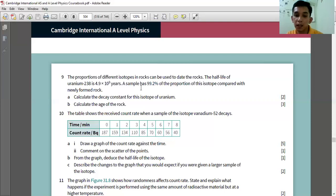So this 99.2 percent is the ratio between the original number of the radioactive materials with the number after it decays, or we can say it is N over N₀. The question is: calculate the decay constant for this isotope of uranium and calculate the age of the rock.